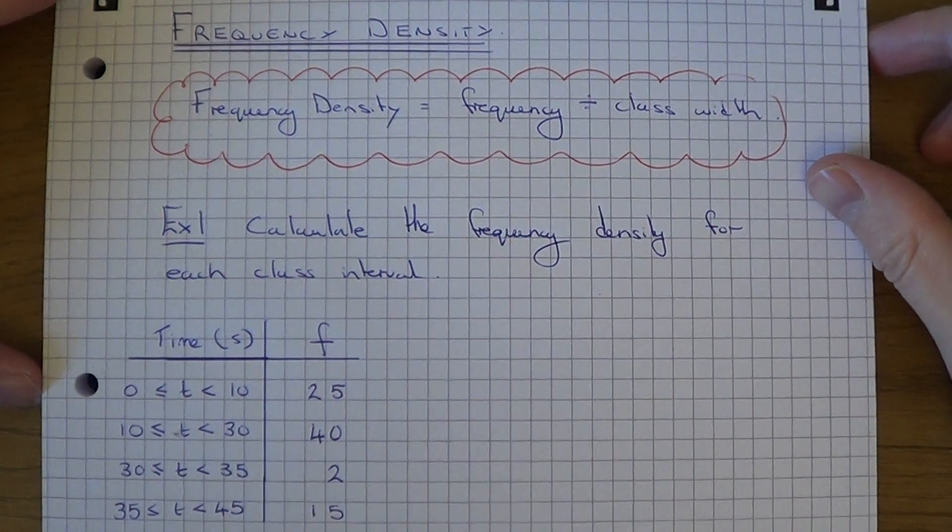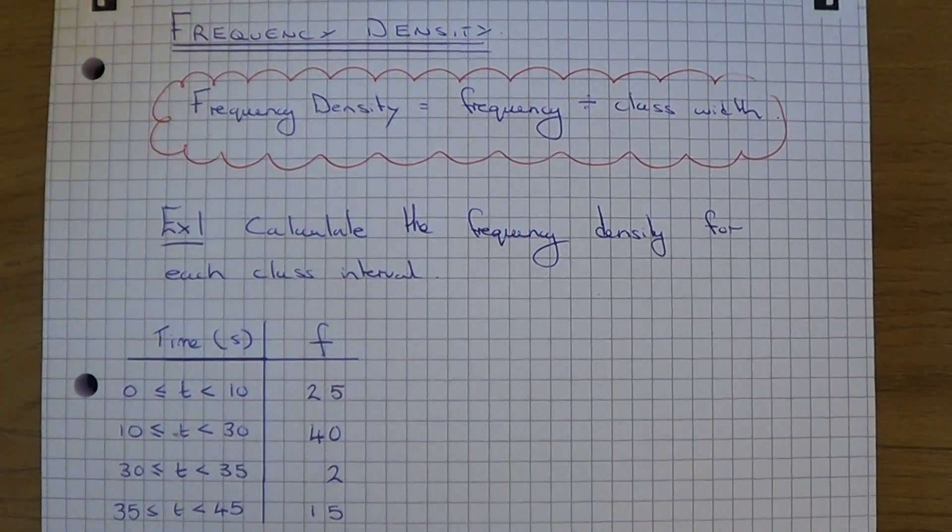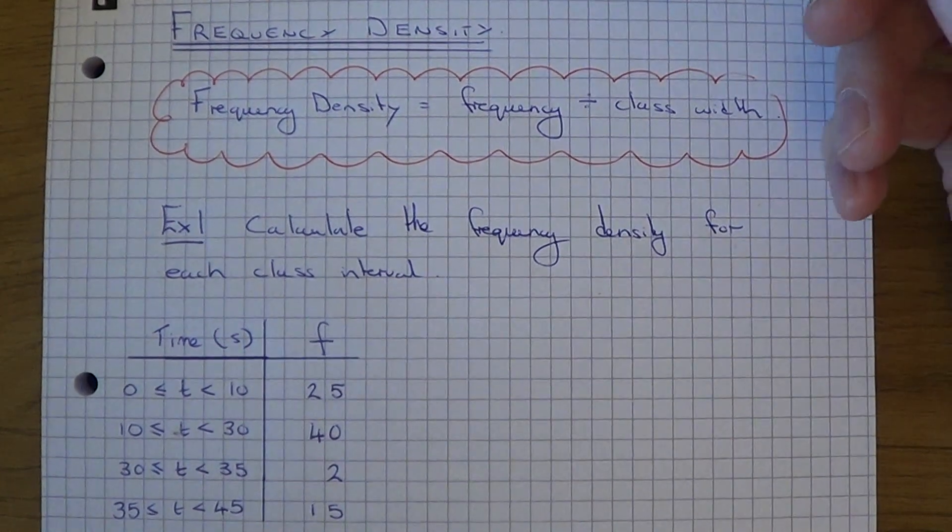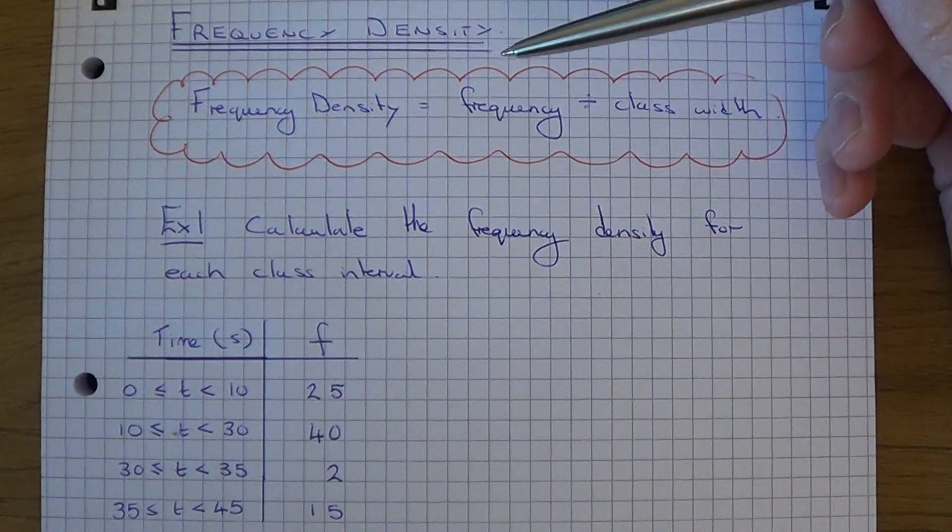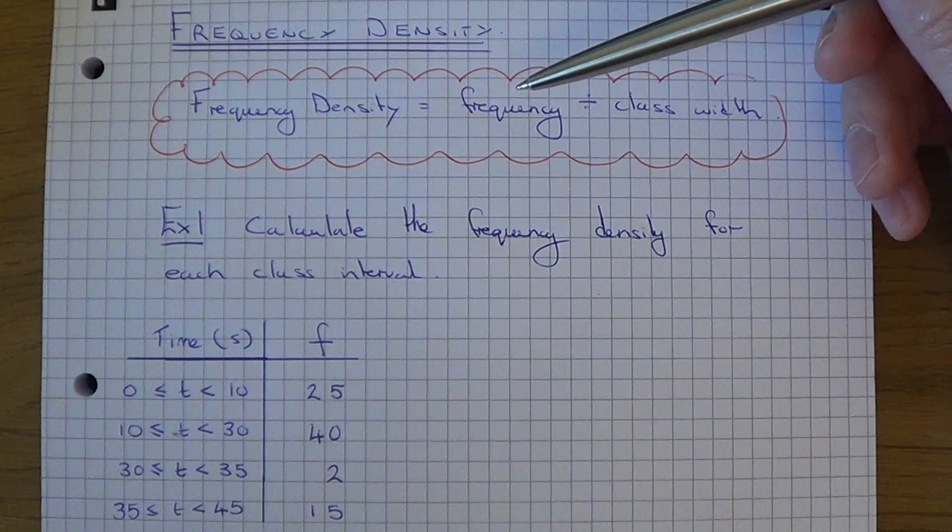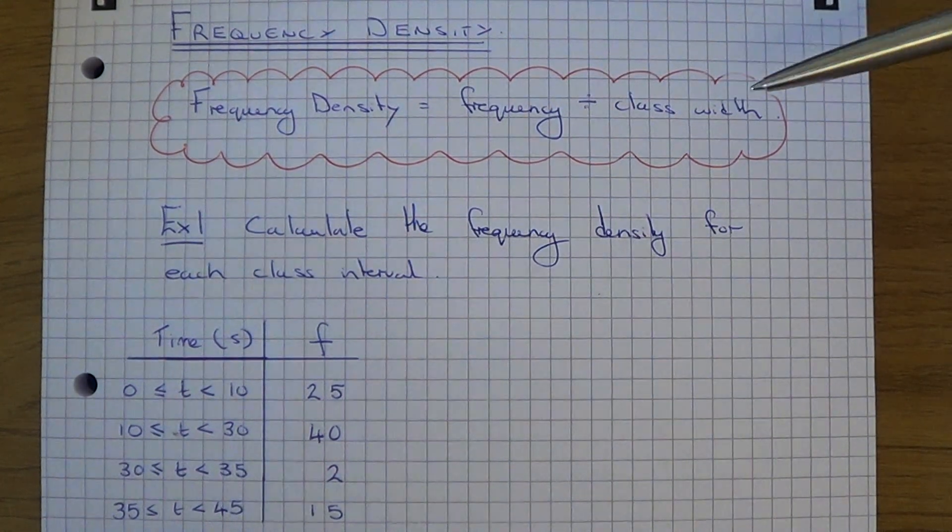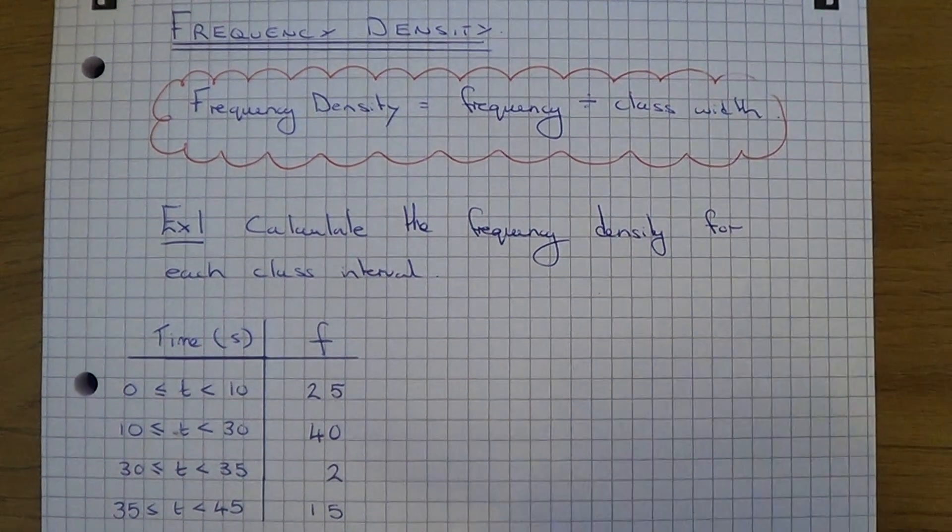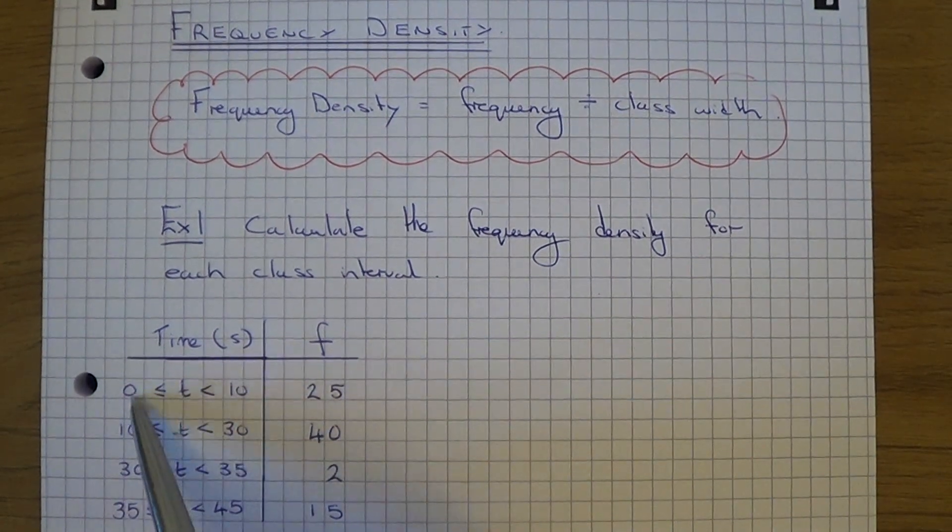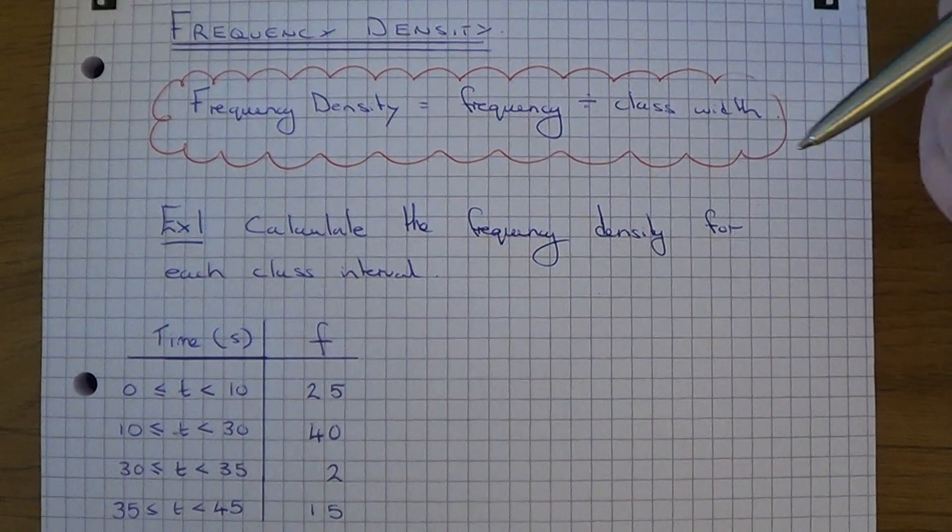Hi, today I'm going to show you how to work out the frequency density, which is what you need to calculate if you need to draw a histogram. To work out the frequency density, you do the frequency divided by the class width. The class width is the difference between the upper limit and the lower limit of each group.